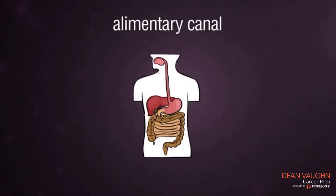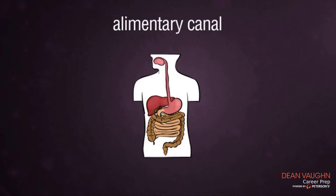The alimentary canal is the entire tract through which food passes — a long, continuous hollow tube extending from the mouth to the anus. It includes the mouth, esophagus, stomach, small intestine, large intestine, rectum, and anus.